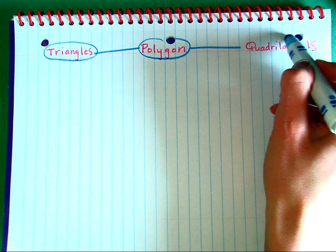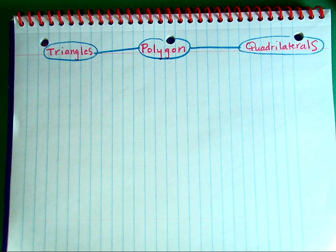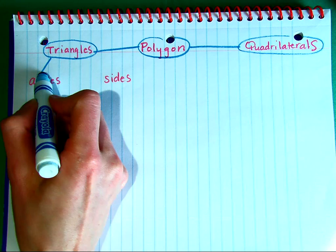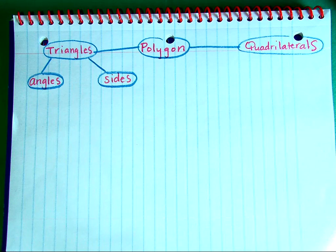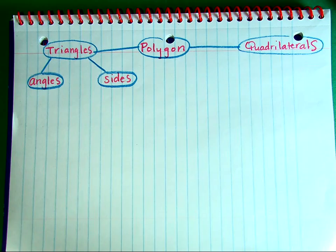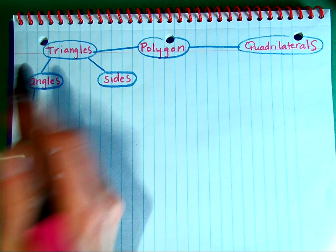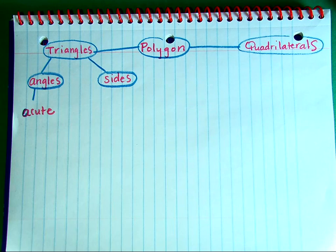I'm going to start first with the triangles and arrange them in two different ways. The first way will be according to their angles. A triangle can be sorted in three different ways. The first way is by a triangle having all of their angles being acute, which means that all of them have a measure less than 90 degrees. We call this an acute triangle.